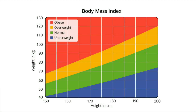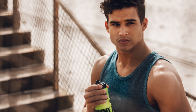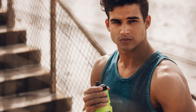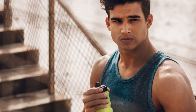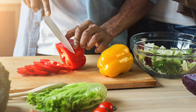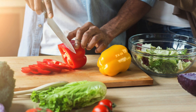If your BMI is less than 18.5, you are in the underweight category — this may not be good for your health. Consider visiting a health professional to discuss your meal plan. If your BMI is between 18.5 and 24.9, you are in the healthy weight category. This is generally good for you; try to maintain this weight, especially as you get older.